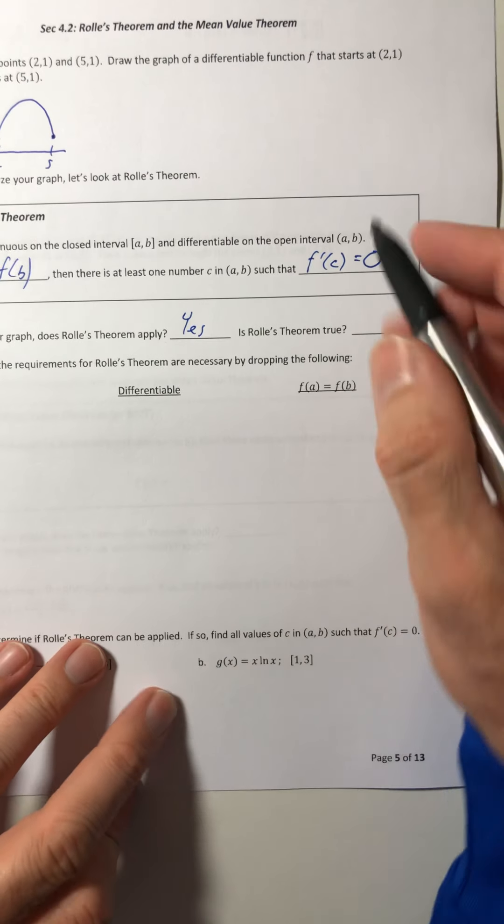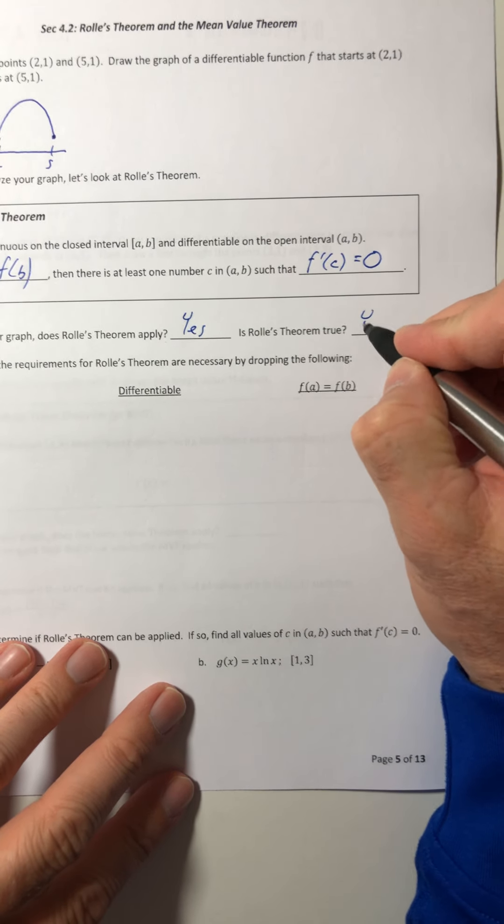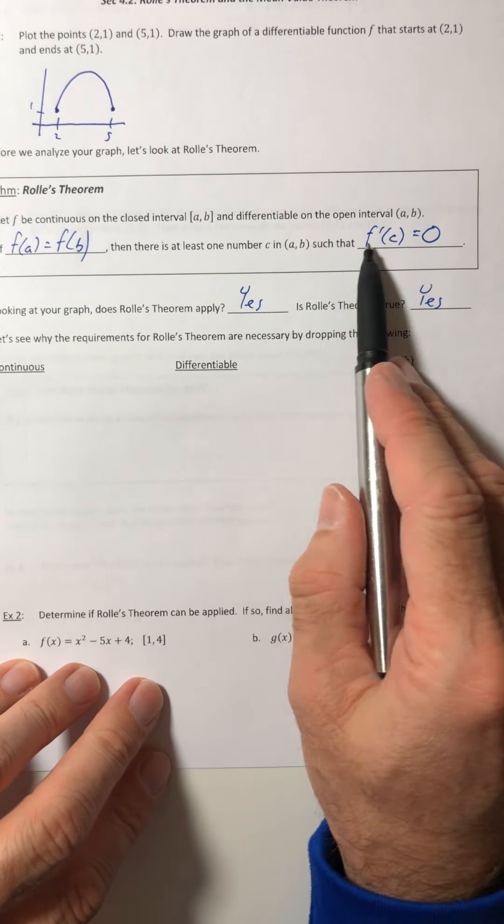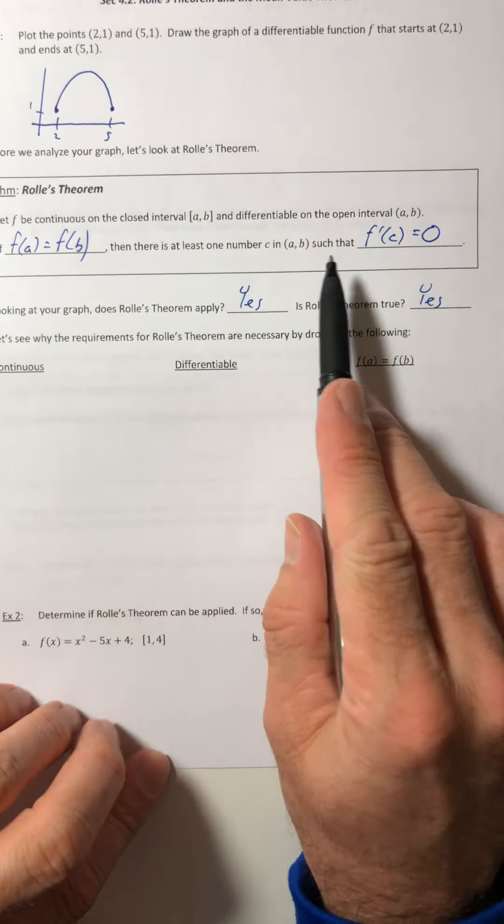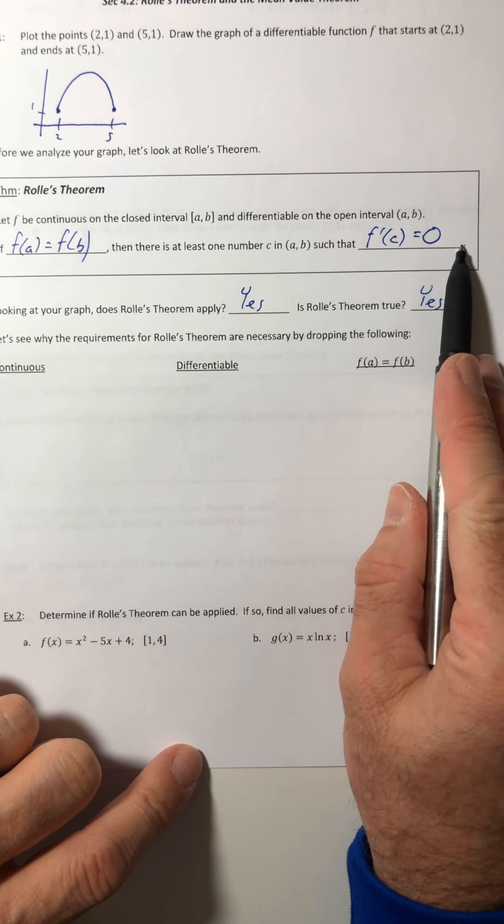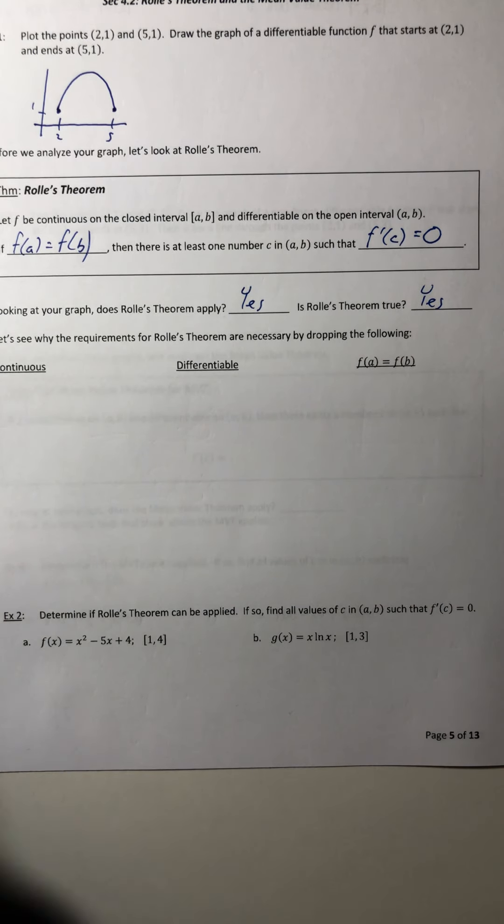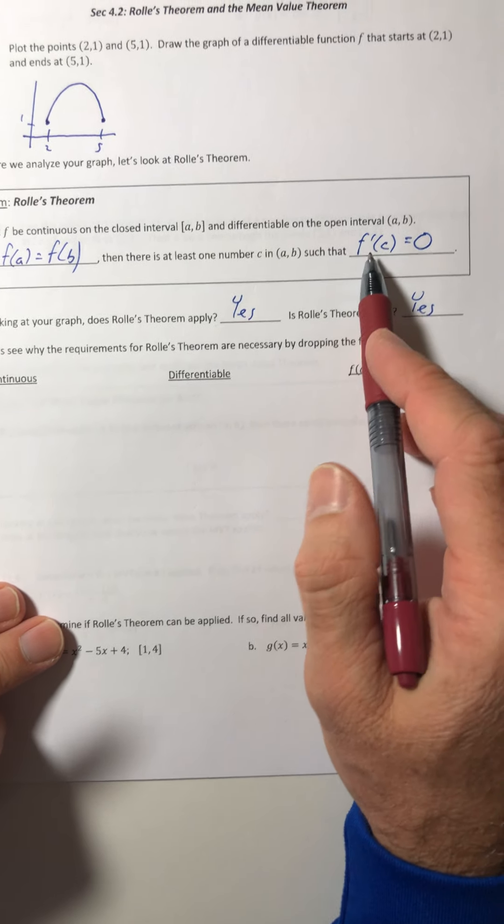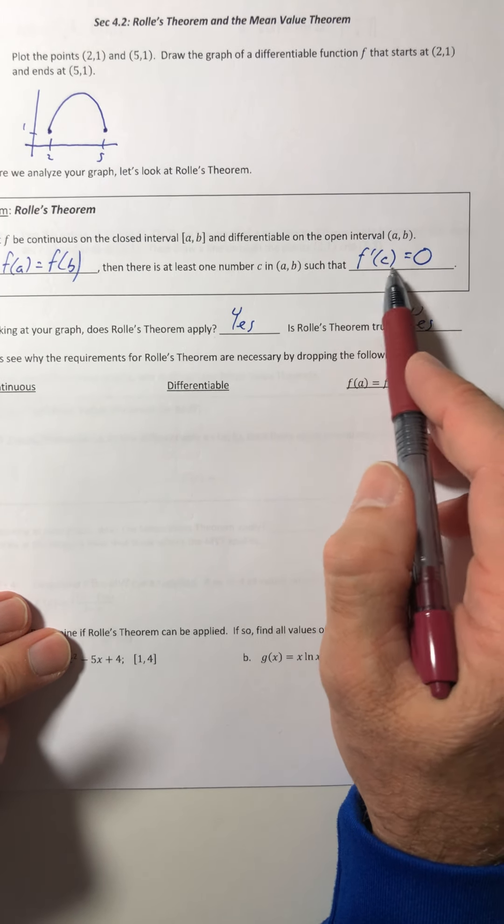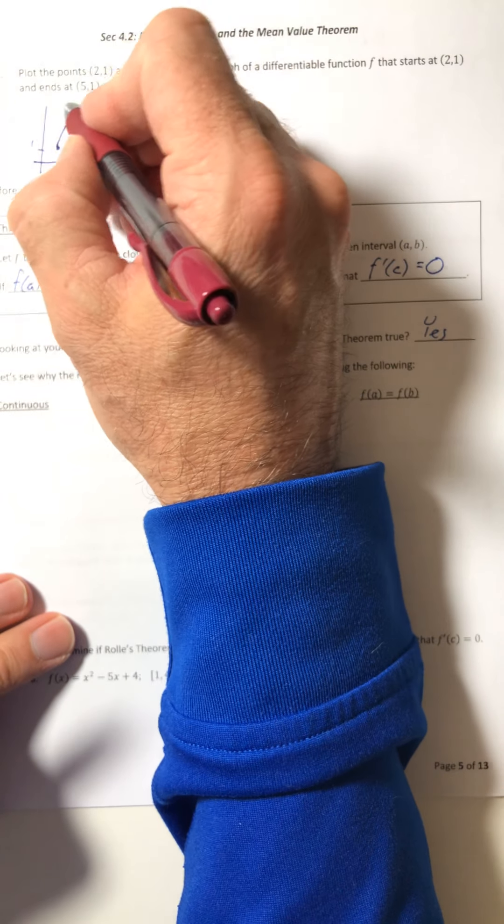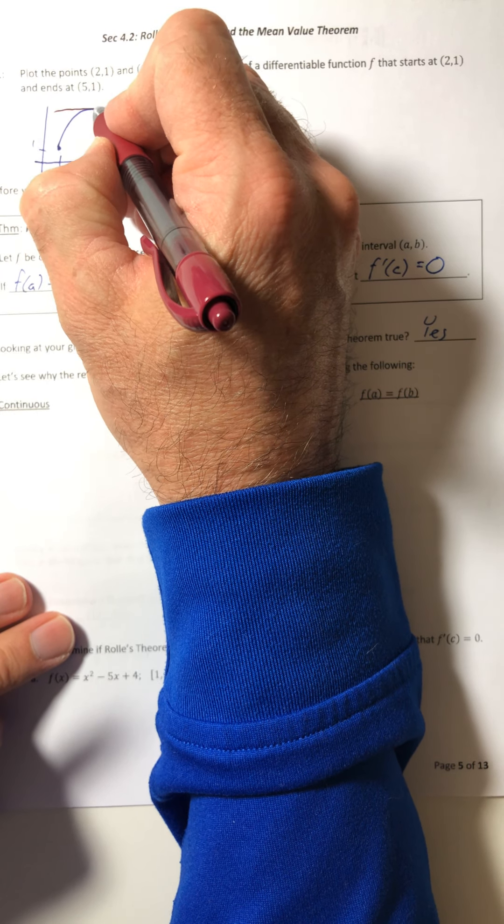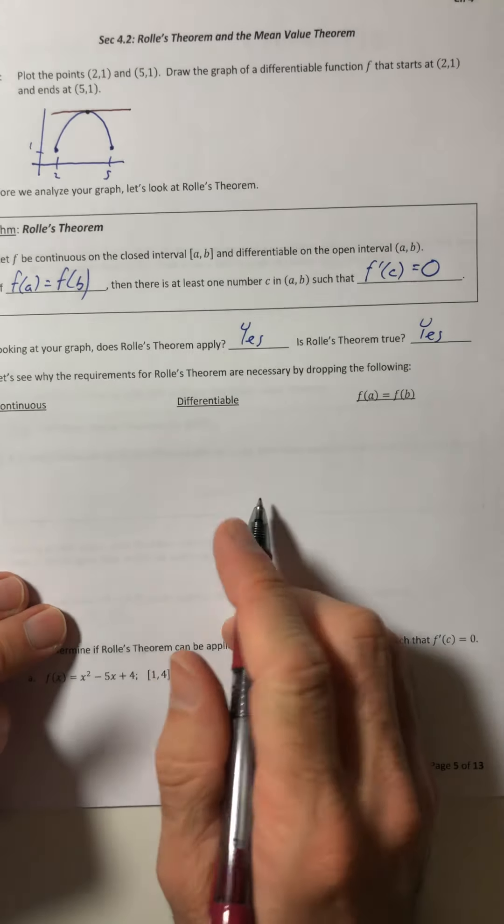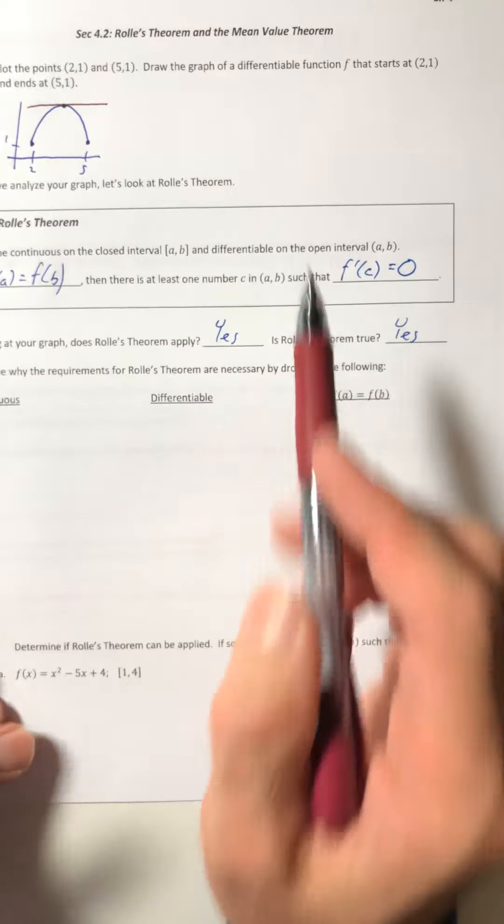So is it true? Yeah. Because the theorem says, all right, well, if it applies, then there has to be at least one place where the derivative is equal to 0. And again, what is a derivative? The slope of the tangent line. So it's saying, hey, there's a tangent line whose slope is 0. In other words, where it's horizontal, and that would be right at the top. So we had at least one place where it had a horizontal tangent line.